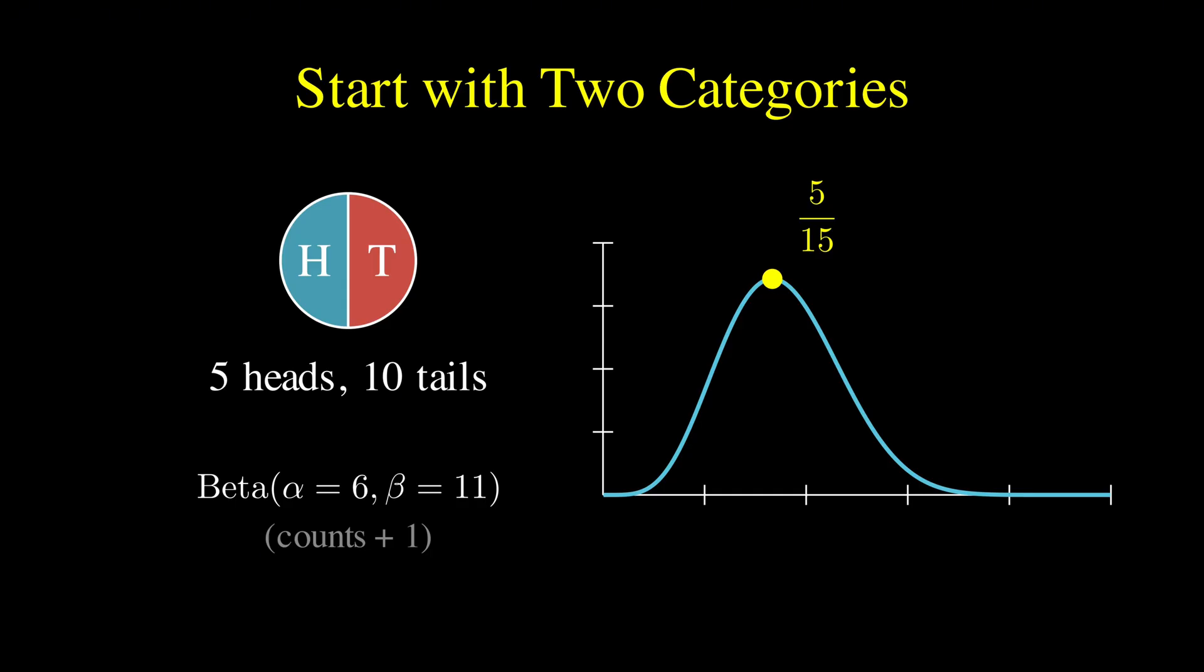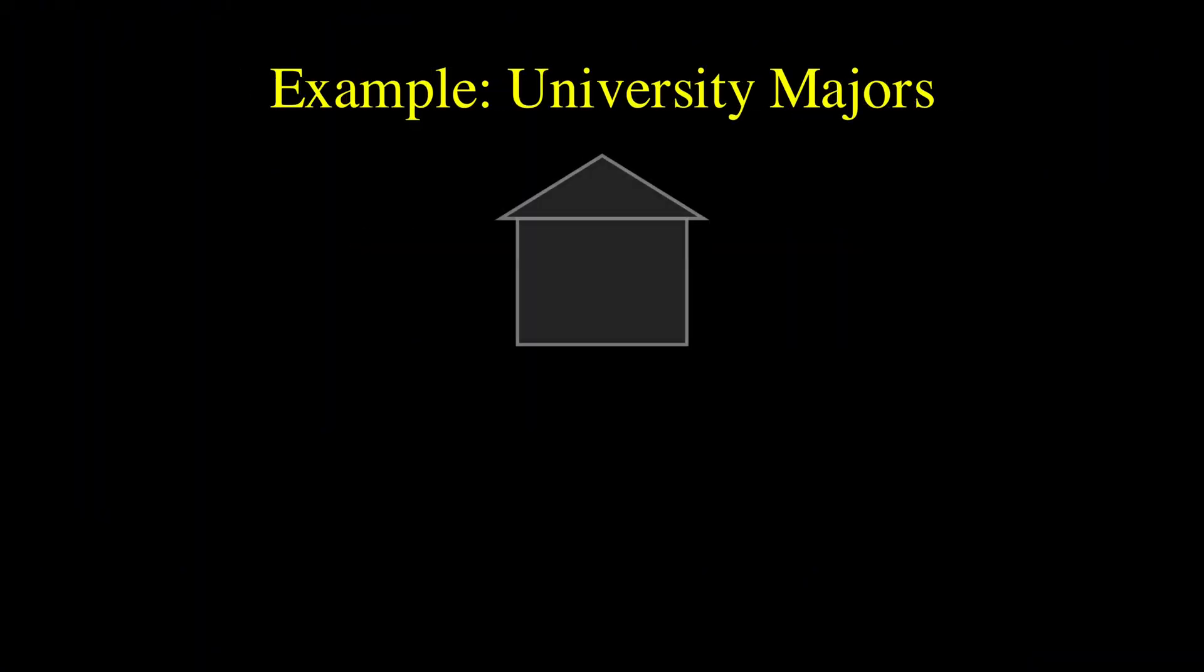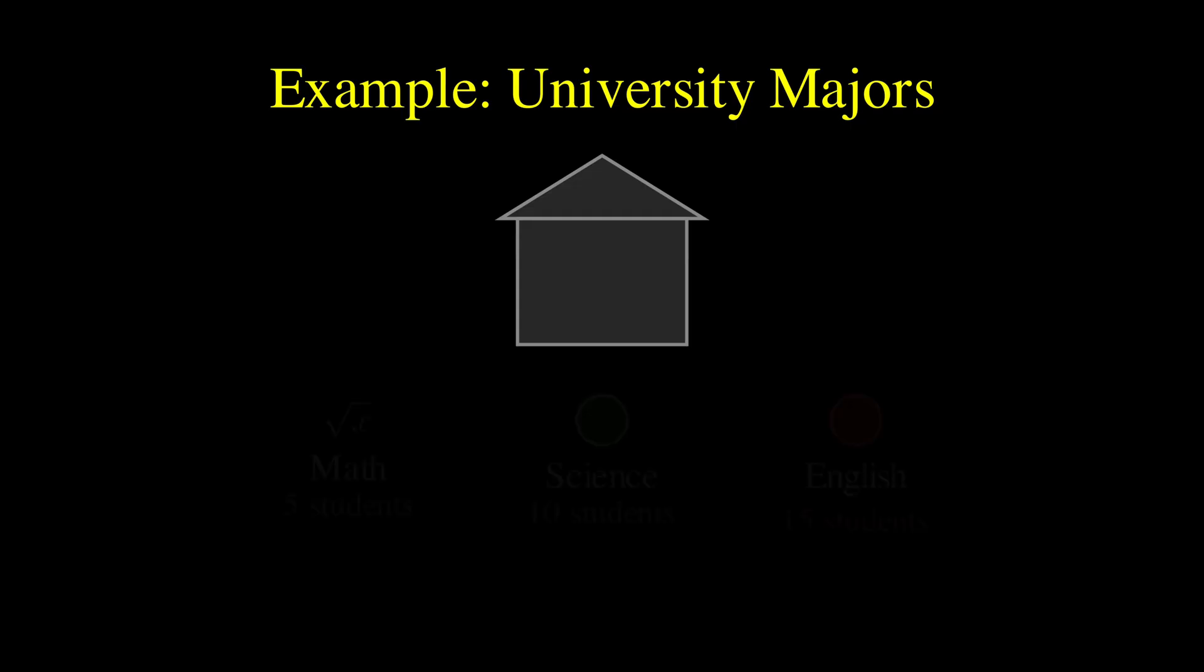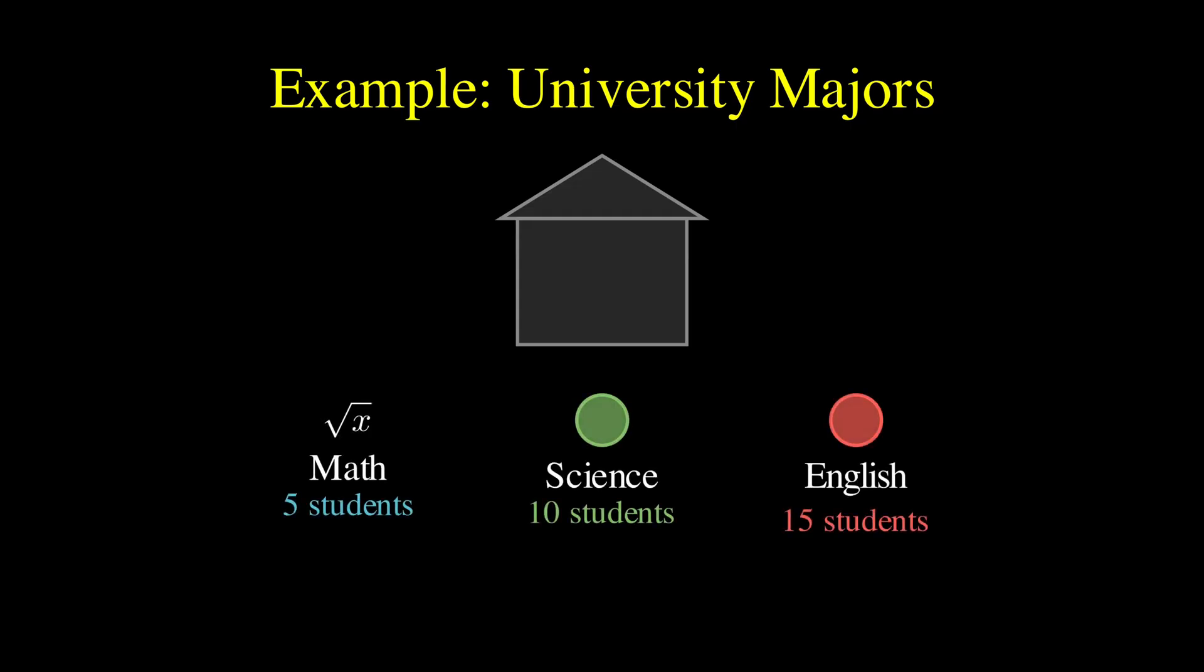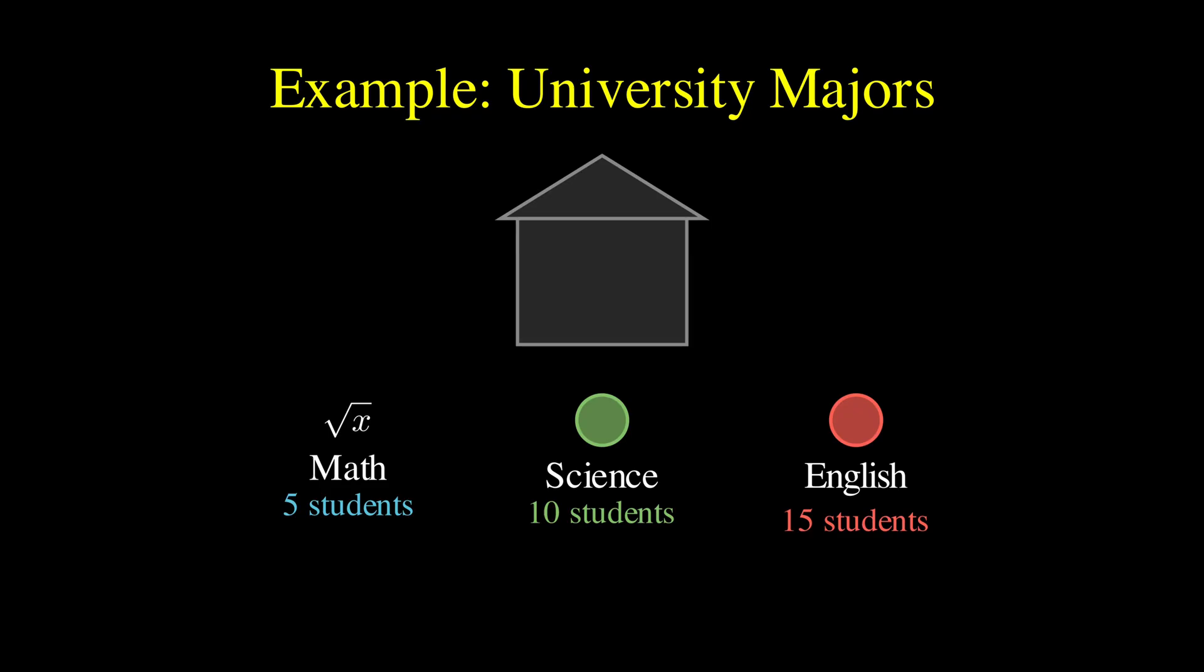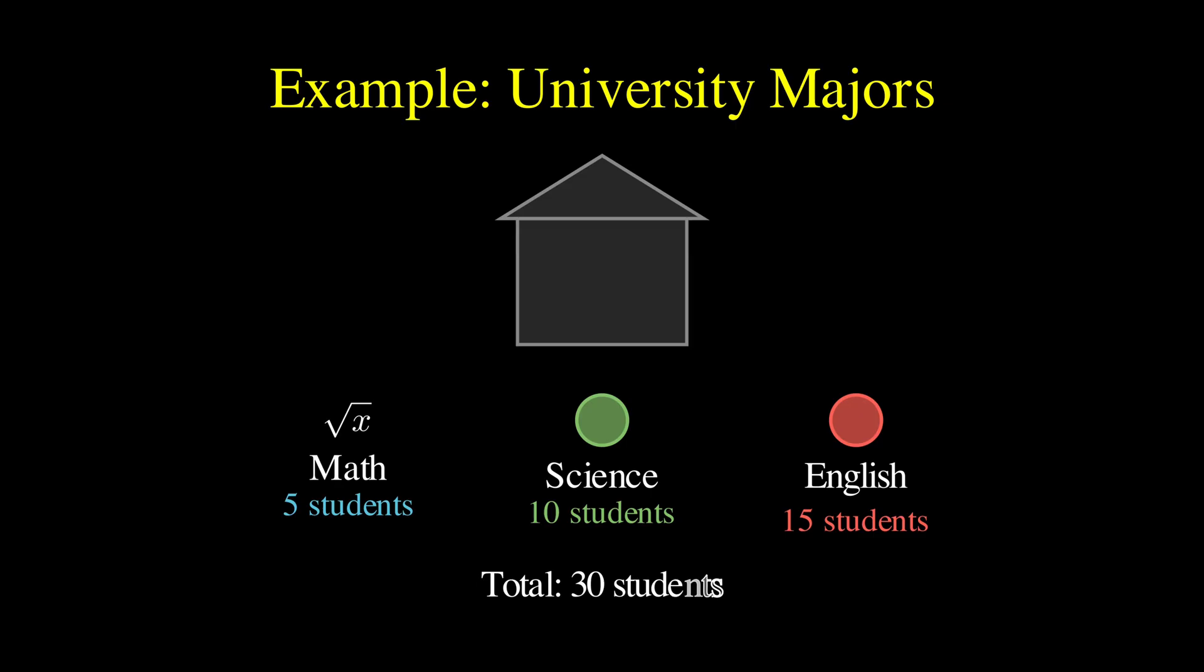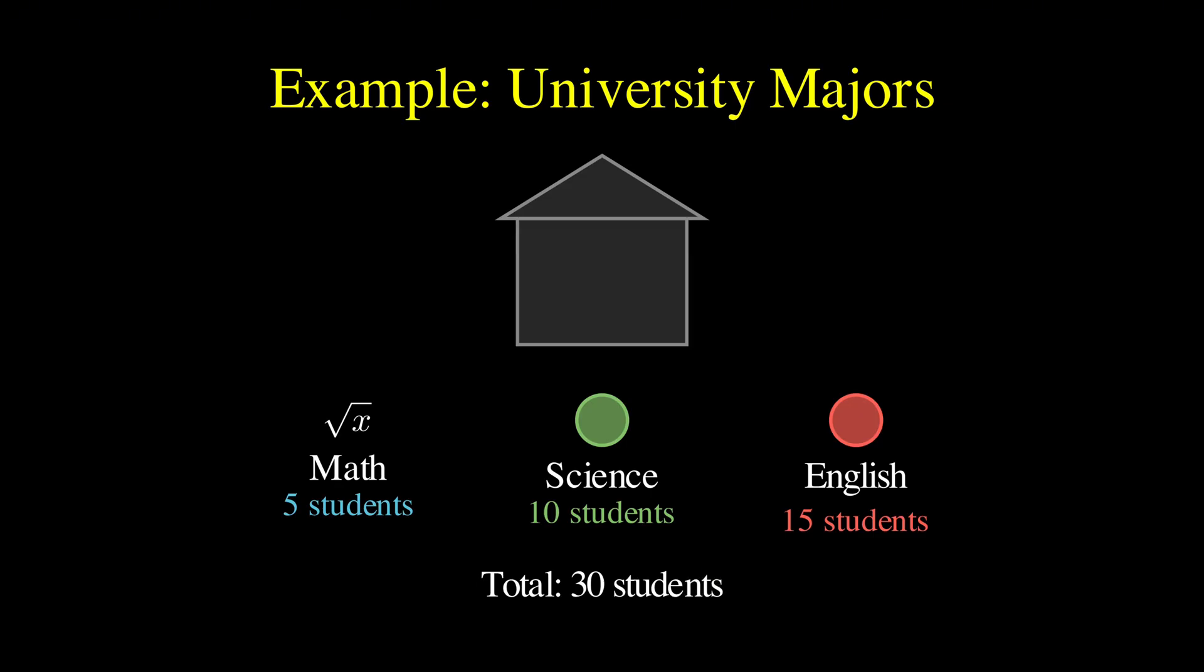Now, here's where things get really exciting. Because what happens when you have three categories instead of two? Let's say you're running a small university that offers three majors: mathematics with 5 students, science with 10 students, and English with 15 students. You want to model the probability that a new student would choose each major.